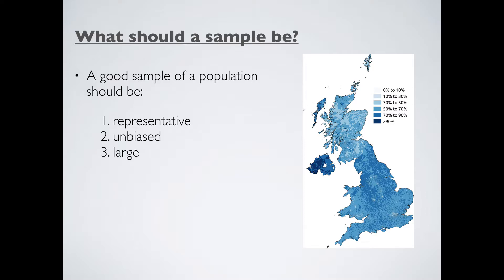For example, if our target population is people in their 20s and you obtained your sample from a university library, chances are the sample is going to be incredibly biased by having lots of students, meaning very few people from other occupations. A large sample is always better — having a larger sample helps to even out random errors and stops results being distorted by individual differences among participants. Generally speaking, the larger the sample, the better.